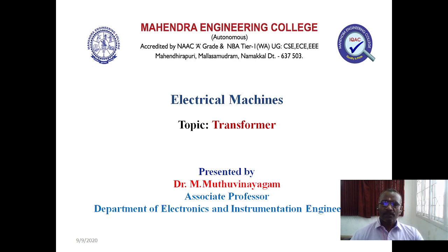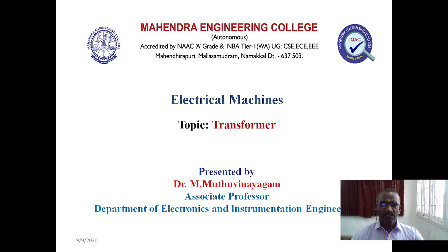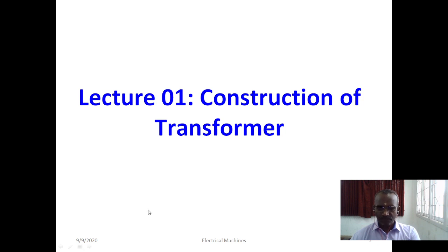What is a transformer? A transformer comes under one category of electrical machines. Normally, electrical machines are classified according to the power supply — we have AC and DC machines — and based on the energy conversion we have generator and motor, and based on the motion we can say one is a rotary machine and another is a static machine. This transformer comes under the category of static machine. A transformer is a static machine which transfers the power from one circuit to another circuit without changing the frequency.